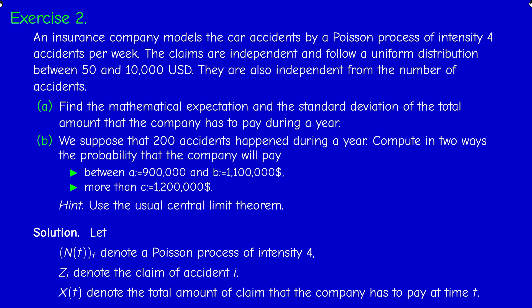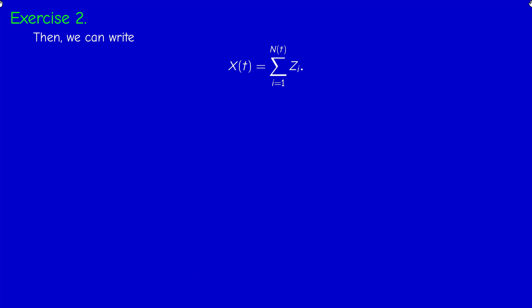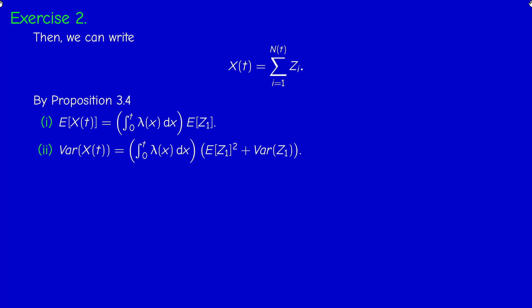If N(t) denotes the Poisson process of intensity 4, Z_i denotes the claim of accident i, and X(t) denotes the total amount the company pays in the interval [0,t], then X(t) is a compound Poisson process. We can write X(t) as the sum of a random number of random values, and apply the standard formulas for the expected value and variance of a compound Poisson process.